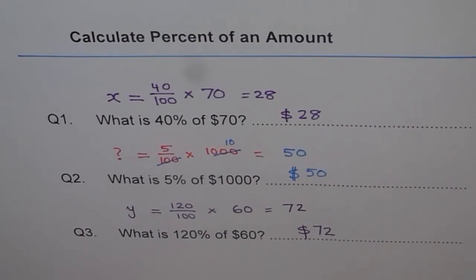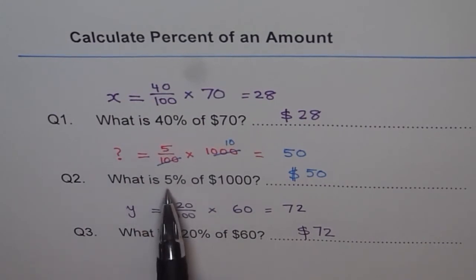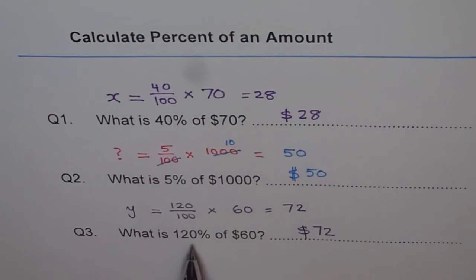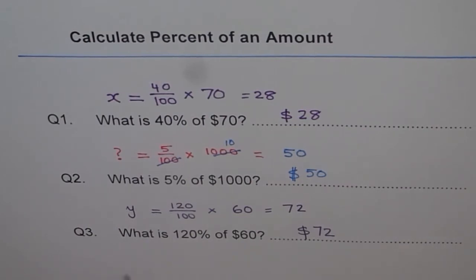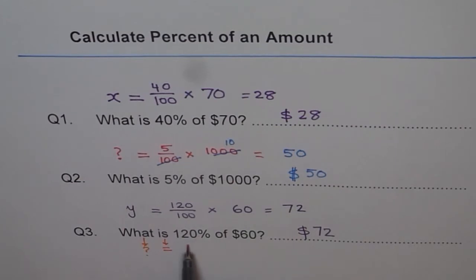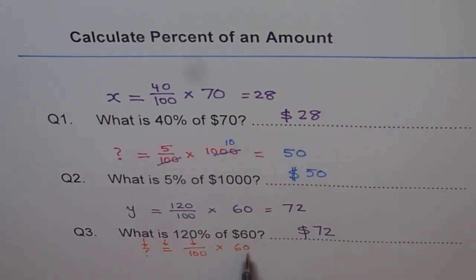That is how you do such problems. Now do some problems from your book. You can also try modified questions: instead of 40%, use 35%; instead of 5%, use 3%; instead of 120%, use 125%. To revise: 'what' means define a variable; 'is' means equals to; percent means that number over 100; and 'of' means times. That is how you make an equation and find the answer.